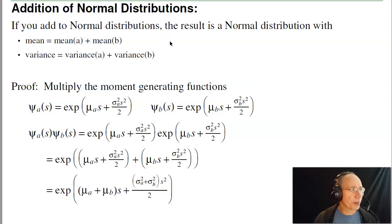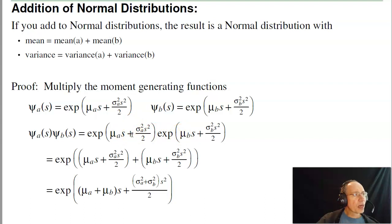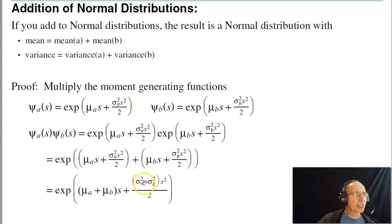As mentioned under the Central Limit Theorem, if you have a normal distribution and you add it to a normal distribution, you get a normal distribution. You can see that with the moment generating functions. Suppose I have two normally distributed functions, a and b. When I add the two together, you multiply the moment generating functions — convolve in the time domain, multiply in the frequency domain. E to the a times e to the b is e to the a plus b, so these get added. Grouping terms, you can see that the mean adds and the variance adds. So when you add a normal distribution to a normal, the means add and the variances add.